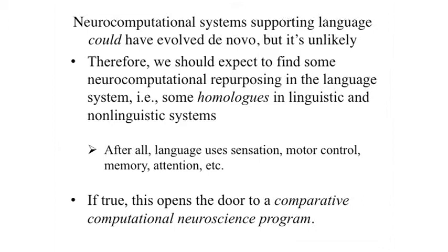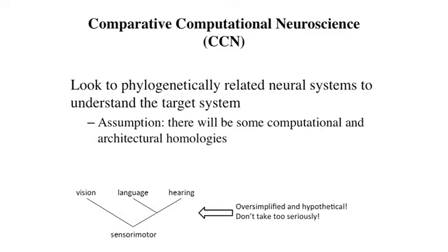Language itself is composed of all these things: there's a perceptual component, a motor component, a memory component — things the brain is already doing for other purposes. I've called this a comparative computational neuroscience program. The idea is we use as our model for language not other language use in other organisms, but similar computational operations in our own brain — using vision or something else to think about how language works.